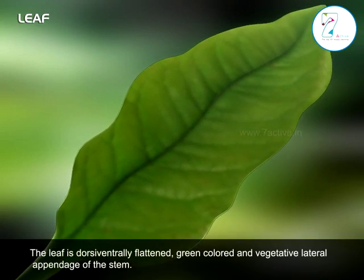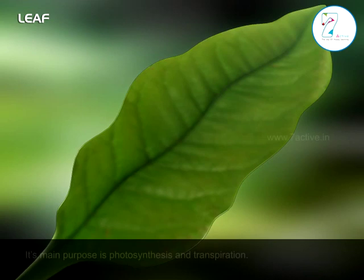The leaf is dorsi-ventrally flattened, green-coloured, and is a vegetative lateral appendage of the stem. Its main purpose is photosynthesis and transpiration.